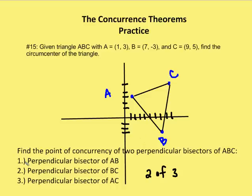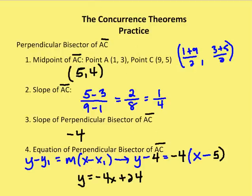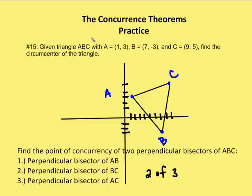We can choose from the perpendicular bisector of AB, BC, or AC. I'm going to take the perpendicular bisectors of AB and BC and find that point of concurrency. So let's start with the perpendicular bisector of AC, going back to the points: A is (1, 3), C is (9, 5).